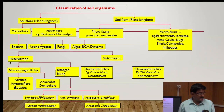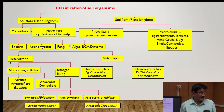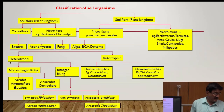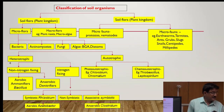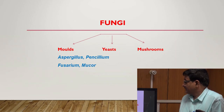Nitrogen-fixing bacteria are classified into three groups: number one symbiotic, for example Rhizobium; number two non-symbiotic; and number three associative nitrogen-fixing bacteria. Non-symbiotic bacteria are divided into aerobic, for example Azotobacter, and anaerobic, for example Clostridium. These are the classifications of soil bacteria.